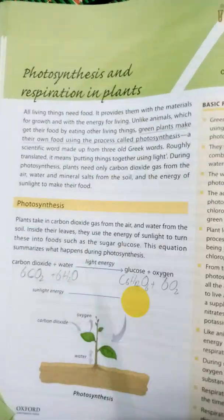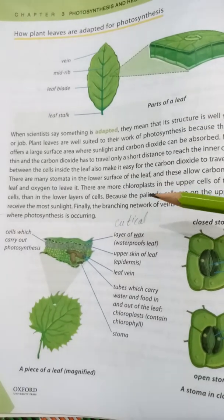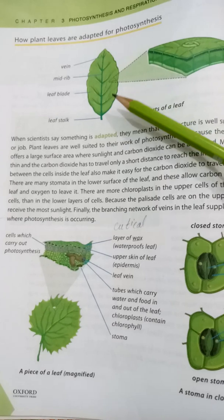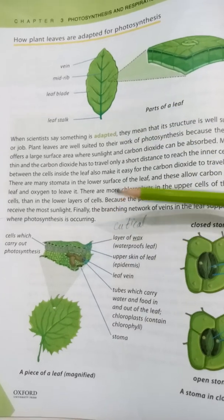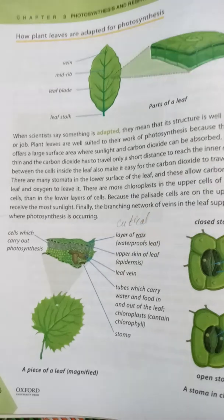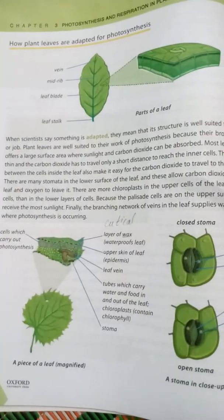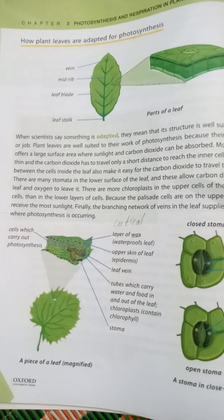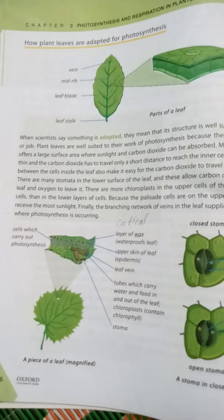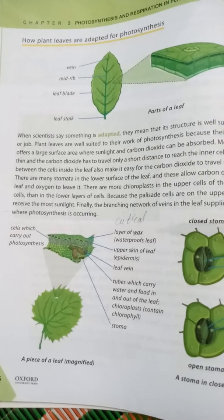Assalamu alaikum. Classics unit number three: photosynthesis and respiration in plants. In our last lecture we studied about plant leaf structure, how they adapted for photosynthesis, how they make their food, and how more chloroplasts are present in the upper surface of the cell because palisade cells are present there, and stomata in the lower surface of the leaf from where carbon dioxide enters.